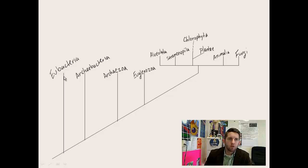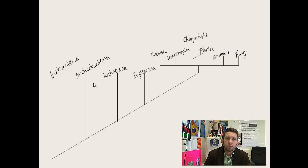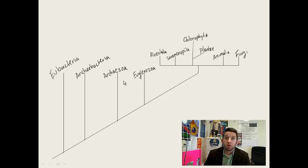We've talked about eubacteria and archaebacteria — these are the prokaryotic kingdoms. Moving on, we moved to the protists, the kingdom Protista. We talked about how diverse they are and how five proposed candidate kingdoms have been suggested within protists. Perhaps they're too diverse to simply be one kingdom and need to be split up further.